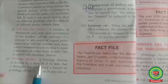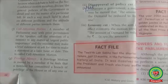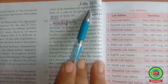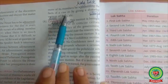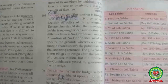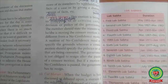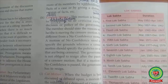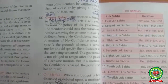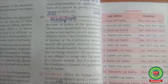7. Privilege Motion: A privilege motion is moved by a member if he feels that a minister has committed a breach of privilege of the house or any of its members by withholding — meaning holding back — the facts of a case or by giving a distorted version of facts. Members of parliament enjoy certain parliamentary privileges granted to them collectively and individually so they can discharge their duties effectively. Any disregard of these rights is regarded as a breach of privilege and is a punishable offense.